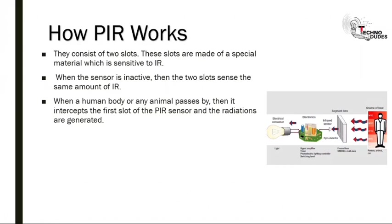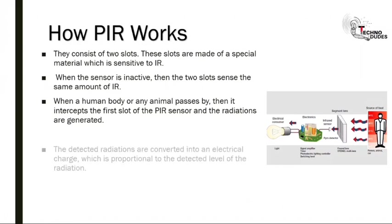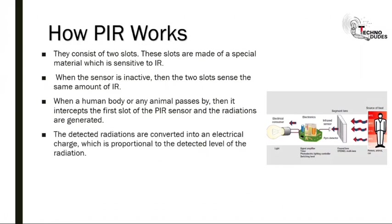If a person is in the sensor range, the detected radiation is checked for a high signal on a single input/output pin. Once the sensor warms up, the output will remain low until there is motion, at which time the output will swing high for a couple of seconds, then return low. The detected radiation is converted into an electrical charge proportional to the detected level of radiation.